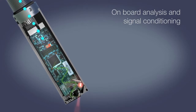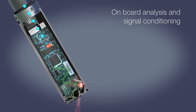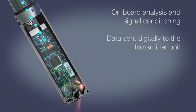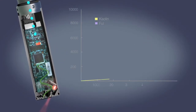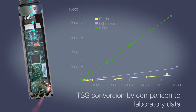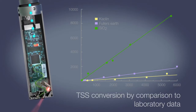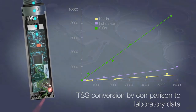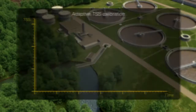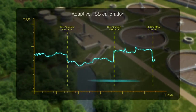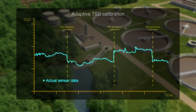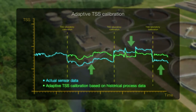Analysis and signal conditioning is conducted within the robust sensor housing and transmitted digitally to the transmitter. The turbidity measurement can be used to determine the total suspended solids, or TSS, of the sample by comparison to laboratory data. The ATS-430's adaptive TSS calibration feature enables the sensor to intelligently calculate the TSS conversion based on historical process data.